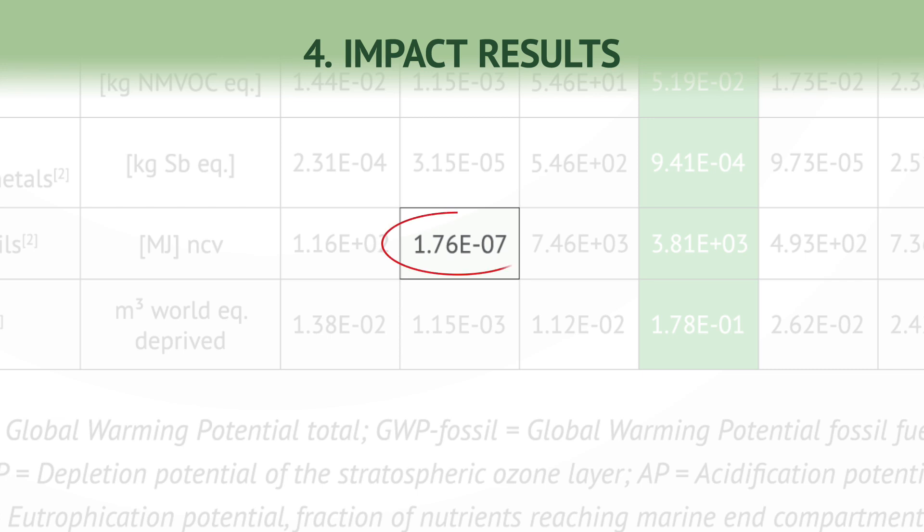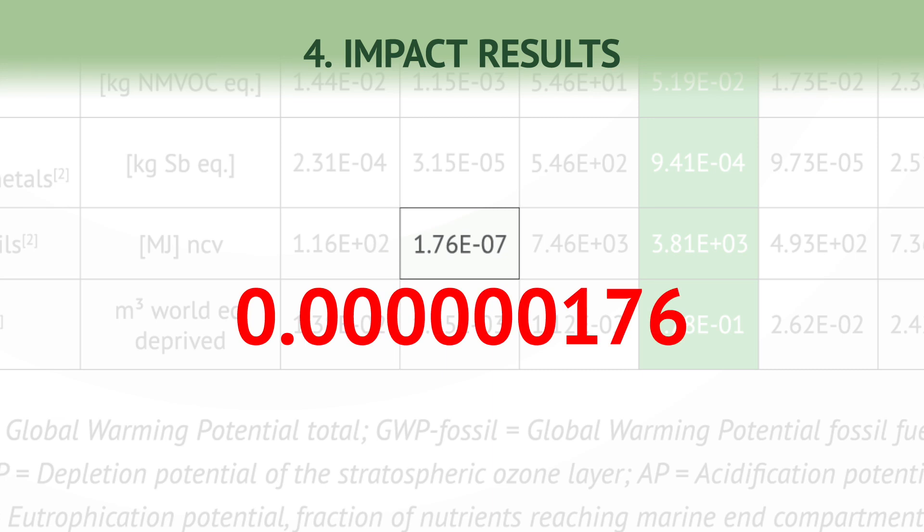Take, for example, the value 1.76e-07, which, if written out fully, would be 0.000000176. By using scientific notation, EPDs make it easier to represent and communicate these values efficiently.